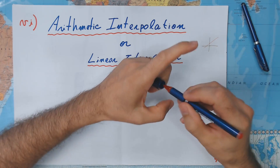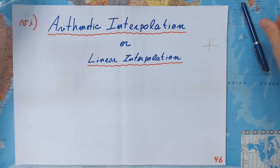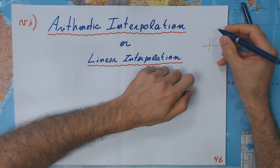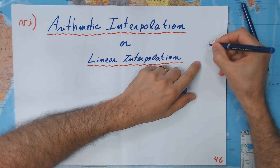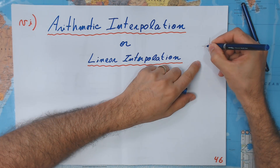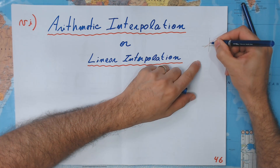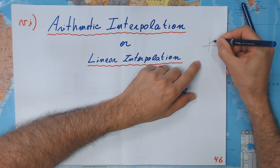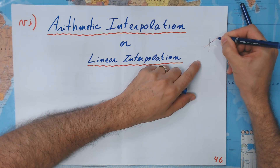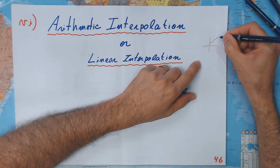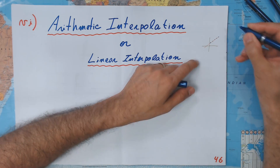So this would be your first term — it could be negative, it doesn't matter. But the terms are always going to form a straight line.